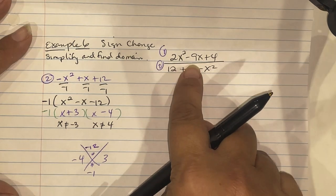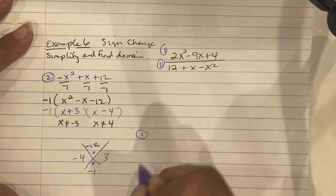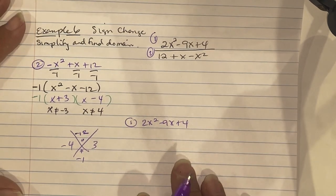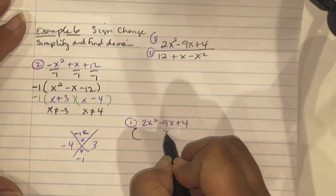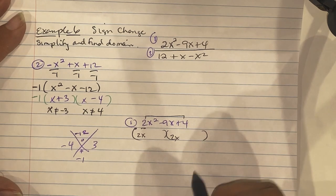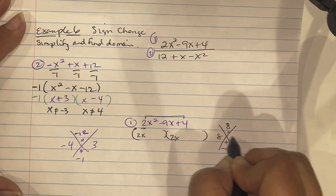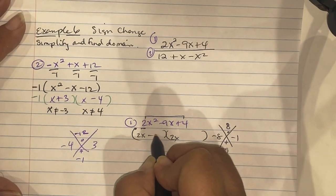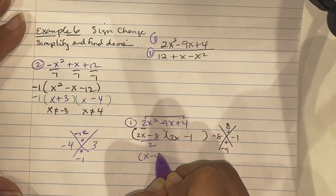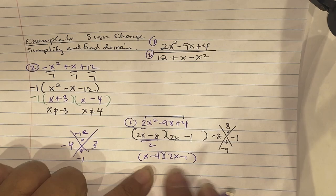For the numerator 2x squared minus 9x plus 4, use the Columbia method. Place 2x in both first positions. First times last: 2 times 4 equals 8. Numbers that multiply to 8 and add to negative 9: negative 8 and negative 1. Divide negative 8 by 2 to get x minus 4, giving factors x minus 4 and 2x minus 1.